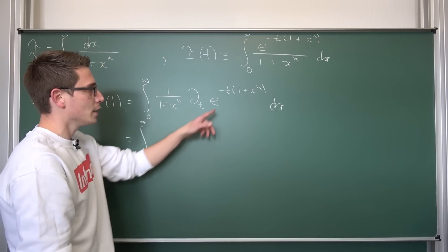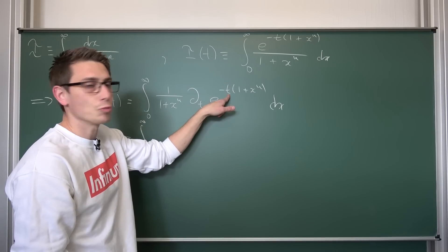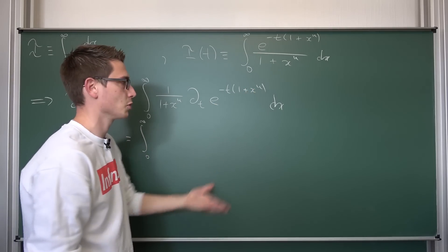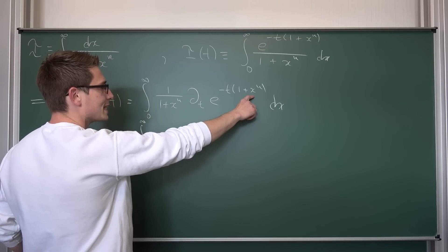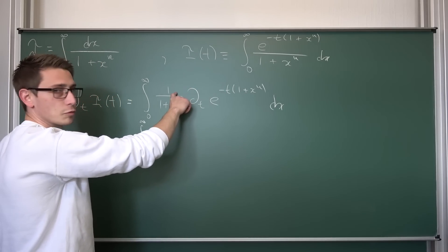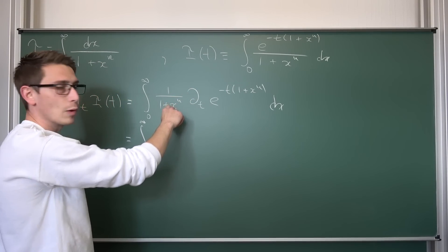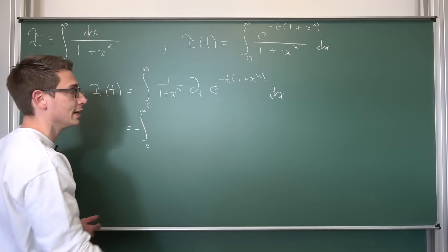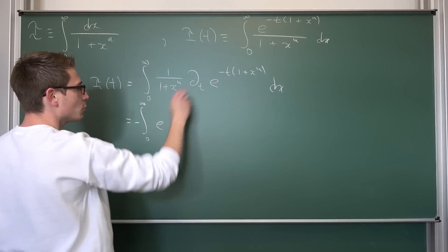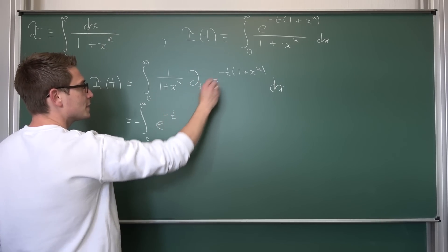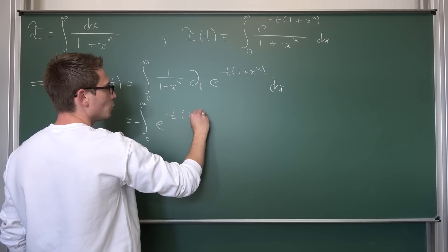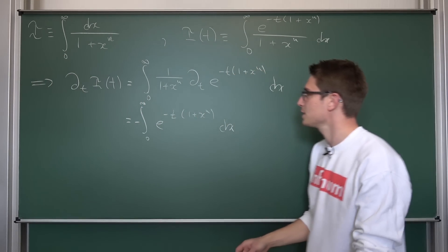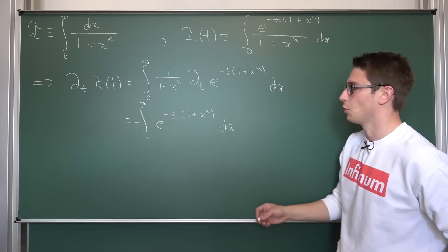The differential of t is just 1, but negative 1 plus x to the nth power stays as a constant, meaning we drag this factor with a negative sign to the front, cancelling in the process with the 1 over 1 plus x to the nth power. This leaves us just with a negative sign, which we bring to the outside using linearity of the integral, and on the inside we are left with e to the negative t times 1 plus x to the nth power, integrated with respect to x.